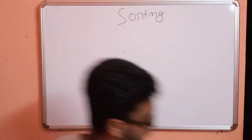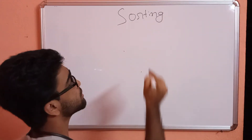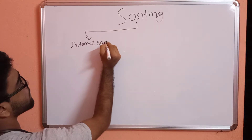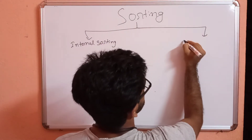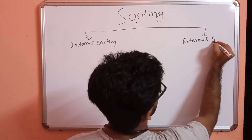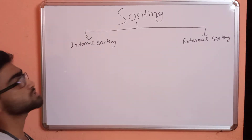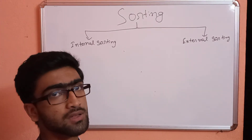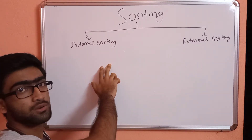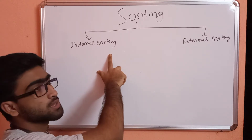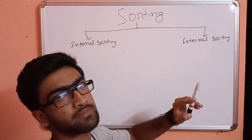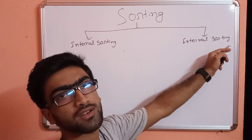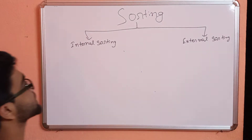Now, what are the kinds of sorting? Sorting is generally of two types: one is internal sorting and another is external sorting. Internal sorting is performed when the dataset is small and can be loaded into the primary memory of a computer. But when the data is very large and cannot be handled by primary memory, we use a slower external memory and apply external sorting techniques.